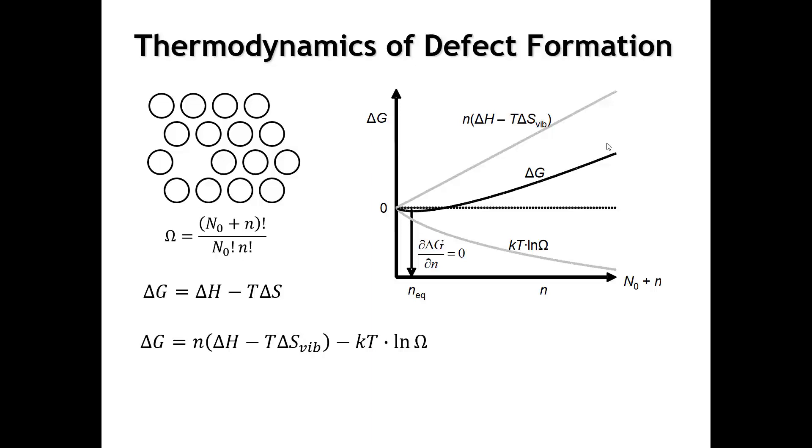So, if we were to plot these terms as a function of the number of defects, the number of atoms that have moved from the bulk to the surface, their concentration, we would get something like this. Delta H minus T delta S vibration goes up. It's positive. It is enthalpically unfavorable to take an atom from the bulk and move it to the surface of the crystal. And the reason why is because we're losing bonding. We do not recover all of the bonding that we get in the bulk of the crystal when we put the atom at the surface. So, that is going to make delta G positive, which is thermodynamically unfavorable.